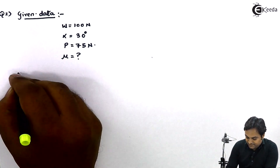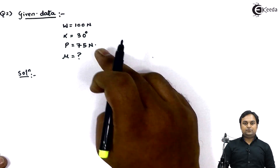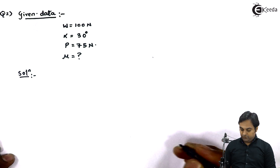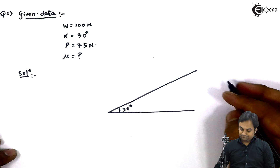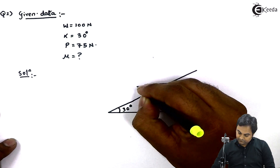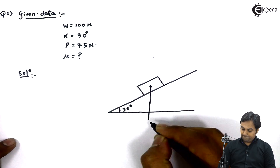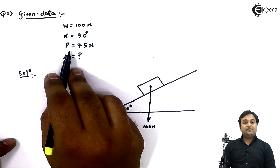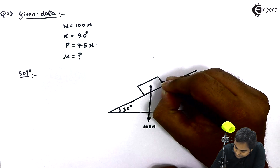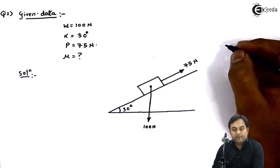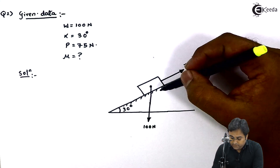Let us start solving this question. In the solution part, the first step is drawing a diagram based on the description: the plane is inclined at 30 degrees to the horizontal. We have an inclined plane of 30 degrees over which a block is kept. That block has a weight of 100 Newton acting downward, and an applied load of 75 Newton acting up the plane.